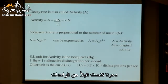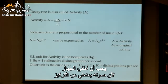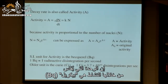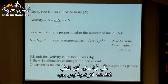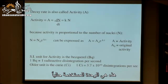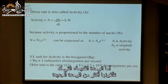Now let's talk about units. The new unit for activity is the Becquerel, Bq, named after the French scientist Henri Becquerel. It equals one radioactive disintegration per second. The older unit is called the Curie, equal to 3.7 times 10 to the 10th disintegrations per second.